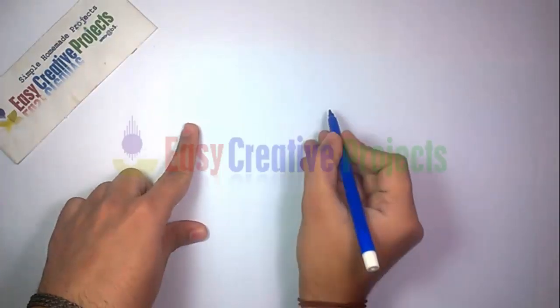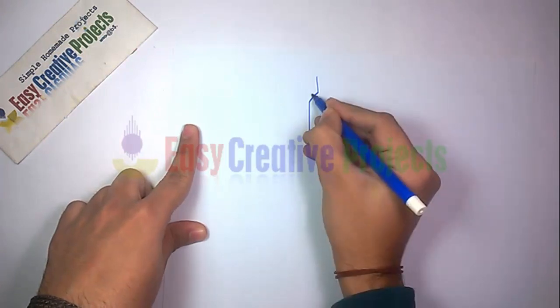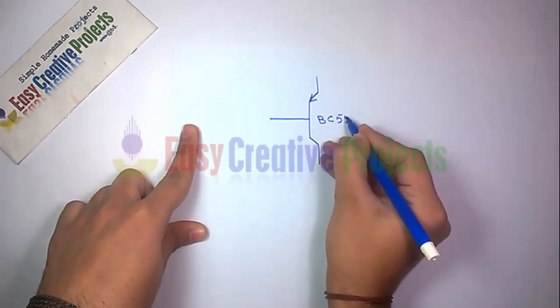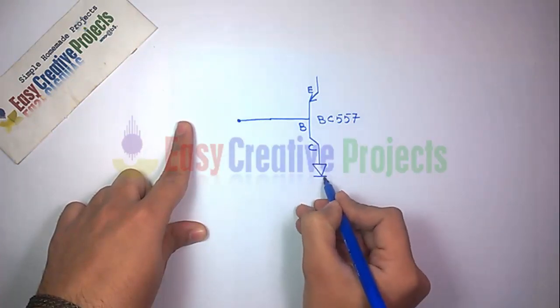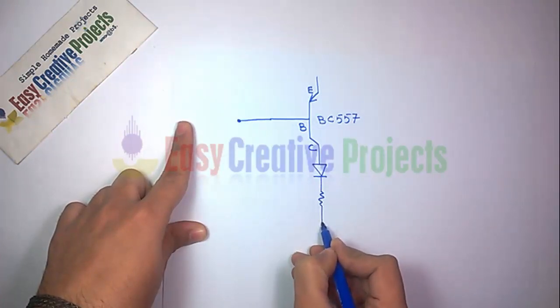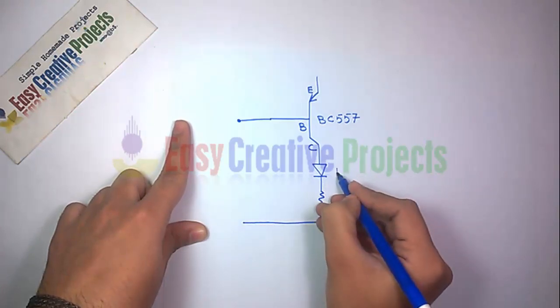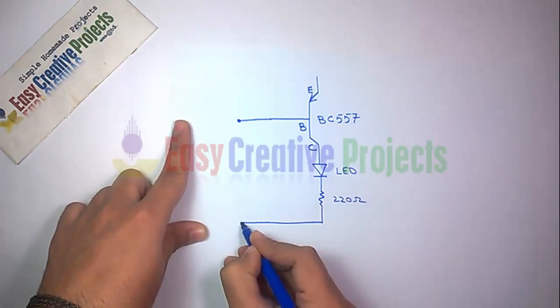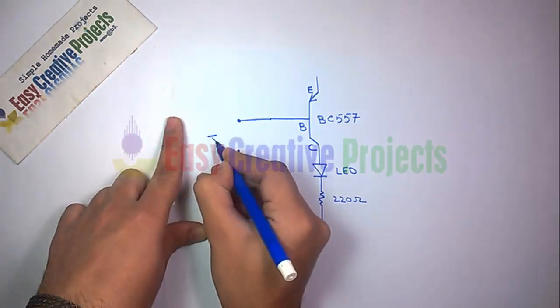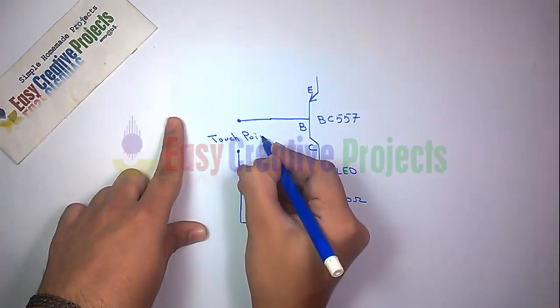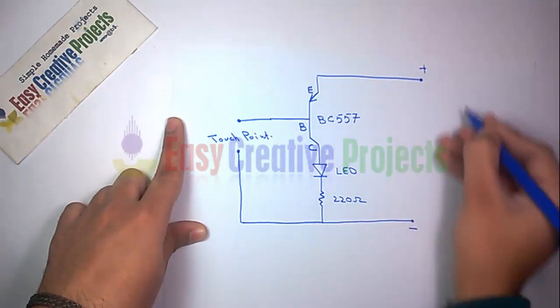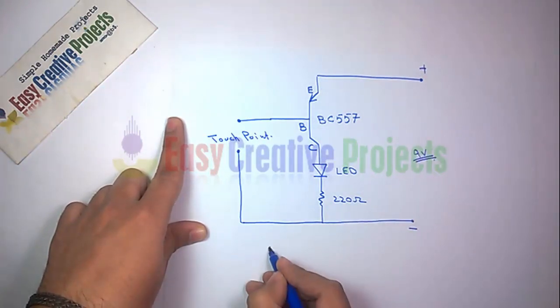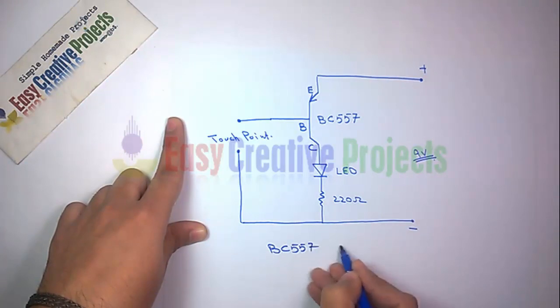First make a circuit diagram. The BC557 PNP transistor has three pins. Connect the positive side of the LED with the collector pin and the negative side with the resistor. The second side of the resistor and base are used for touch points. The emitter is used for positive power and the second side of resistor is used for negative power.